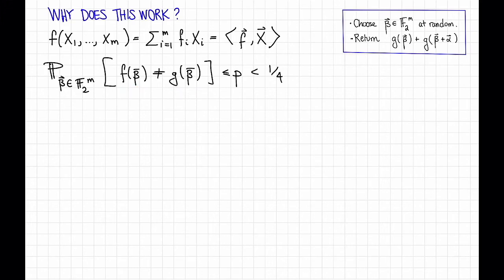Now, let's suppose that we get very lucky, or at least somewhat lucky, and f(β) is equal to g(β) for this β that we choose, and further, f(β + α) is equal to g(β + α).